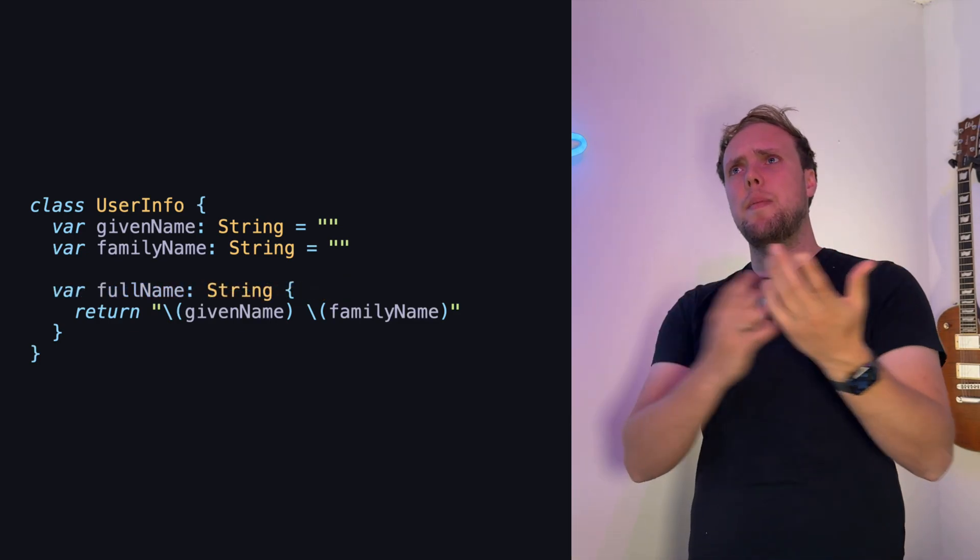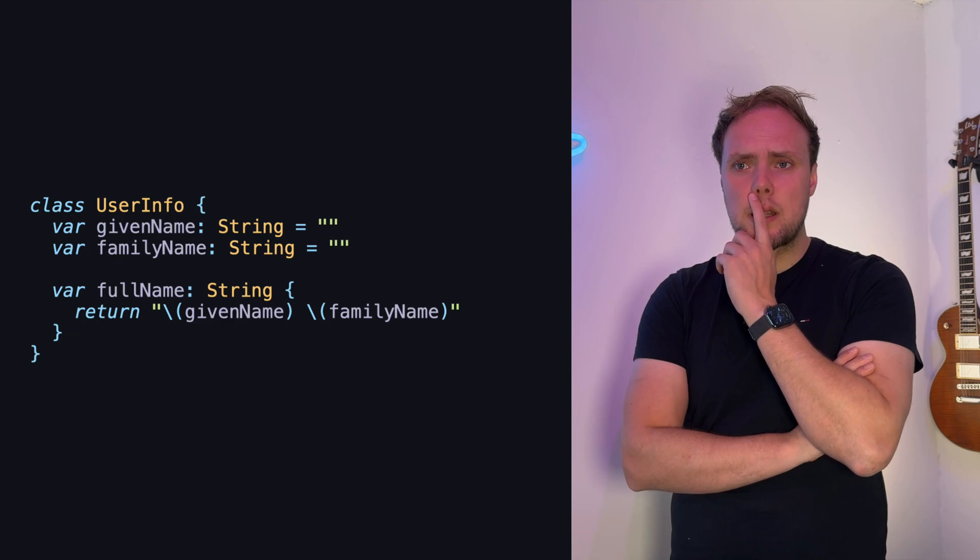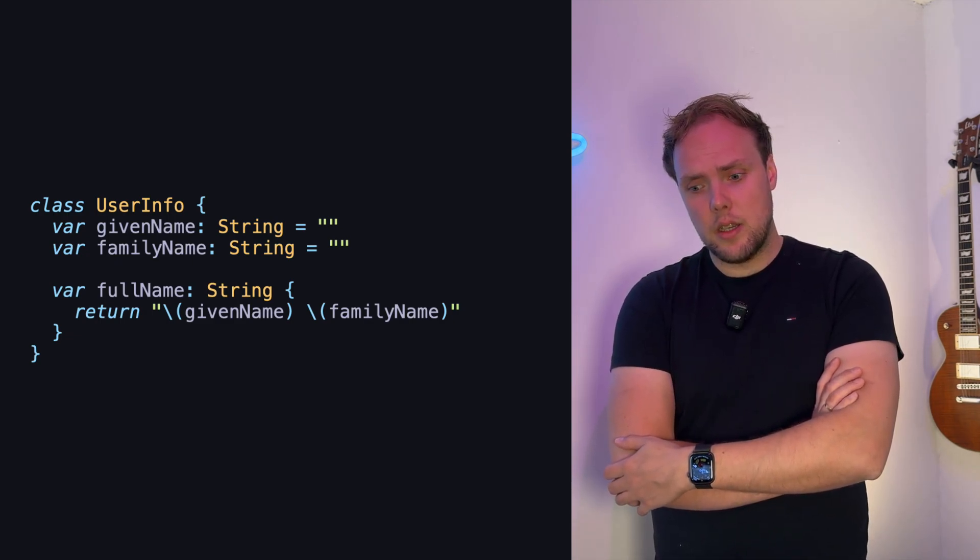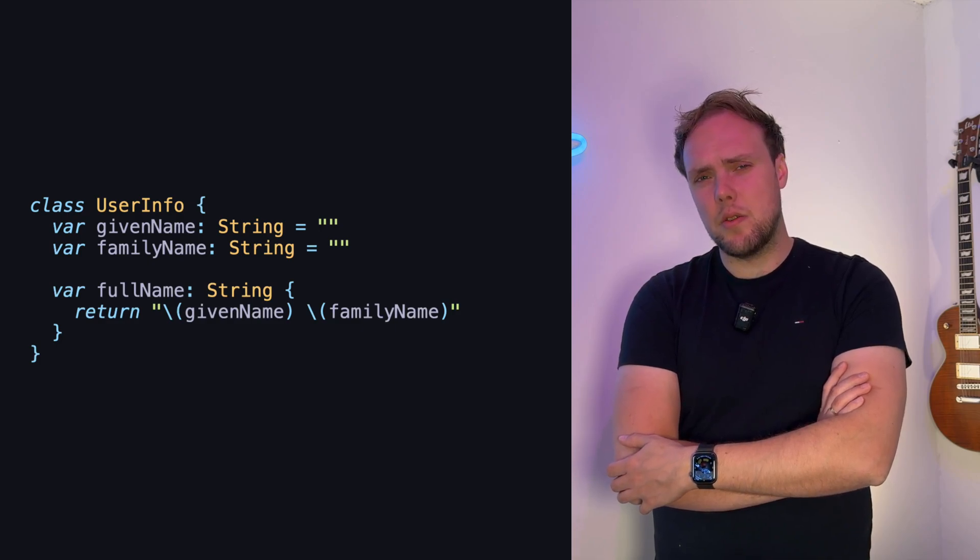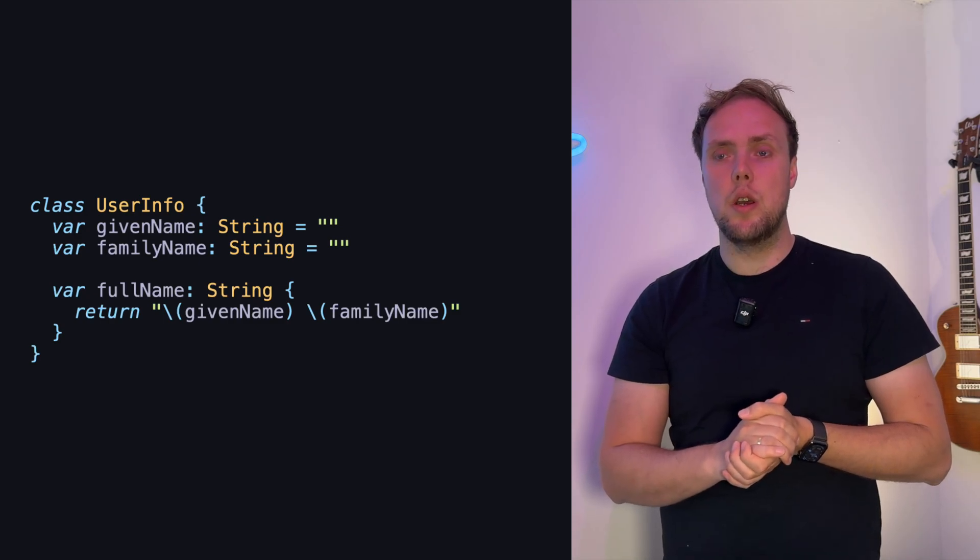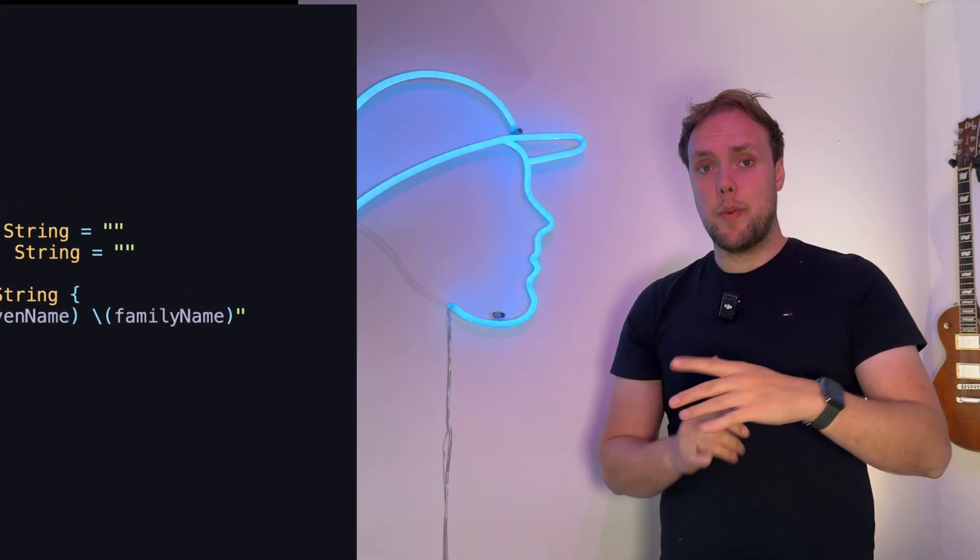So how do we make a choice between these options? Because they all work and are there really any downsides to using a function or a computed property in this case? Well, in this case, I would go with a computed property and I'll explain why. A computed property makes it look like any other property that we have, which is how, to me, a combination of two properties like this feels very much like it should be a property.